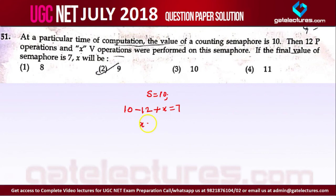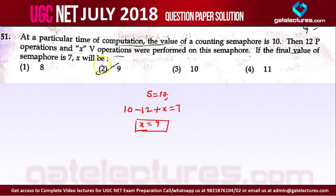After solving this equation, the answer for X is 9. This is a very simple question and has been asked in GATE as well many times as a one-mark question. The answer for this question is option 2, which corresponds to X equals 9.